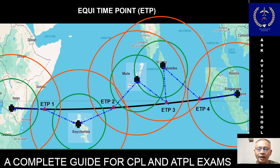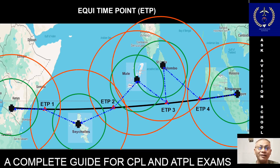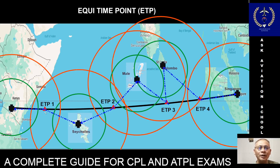For computation of the EDTO entry and exit points, the authorized single-engine speed — VMO/MMO in still air under ISA conditions — was used. However, for computing Equi-Time Points, the prevailing or forecast wind is used to make the computation more relevant. As you learned in CPL or ATPL training, the critical point moves into the wind. This ETP is no different from that critical point — it also moves into the forecast wind.